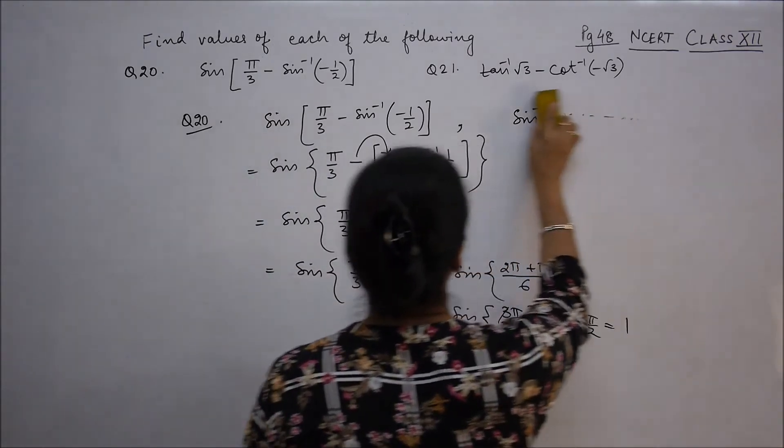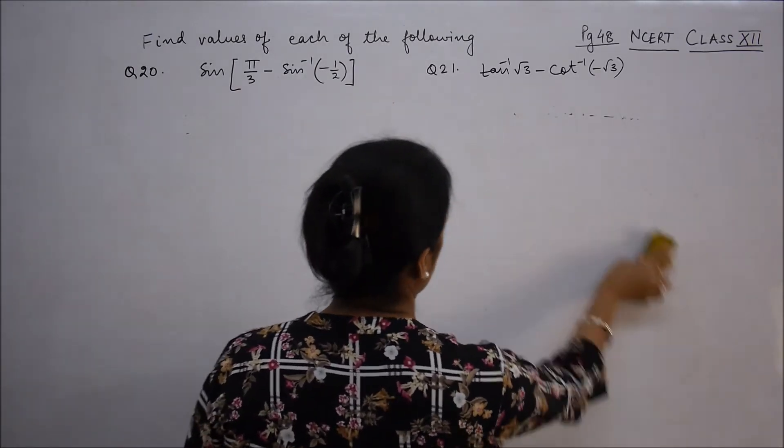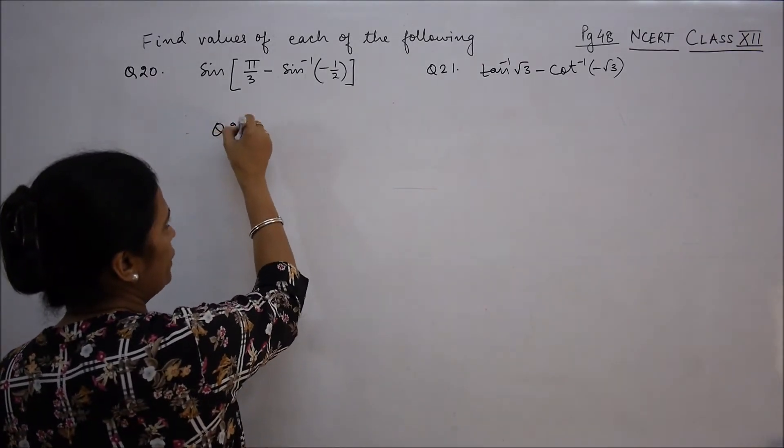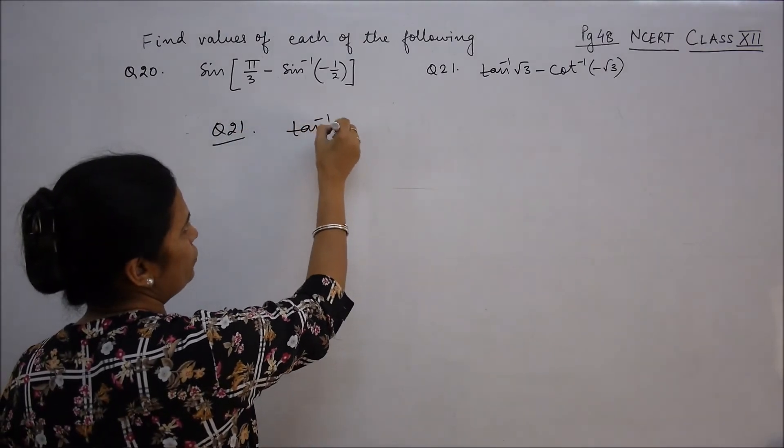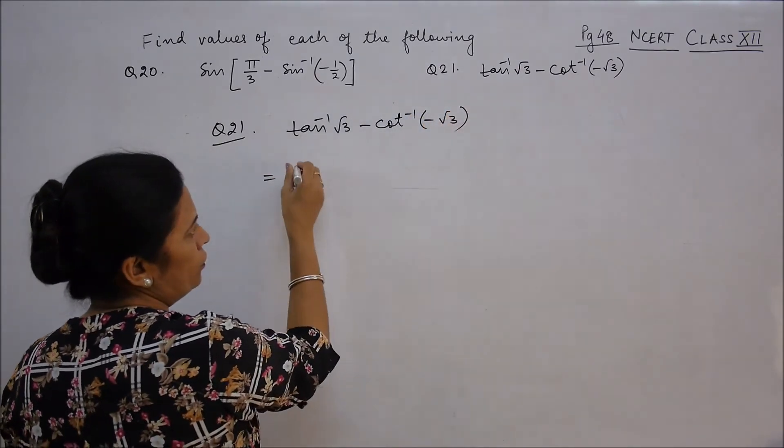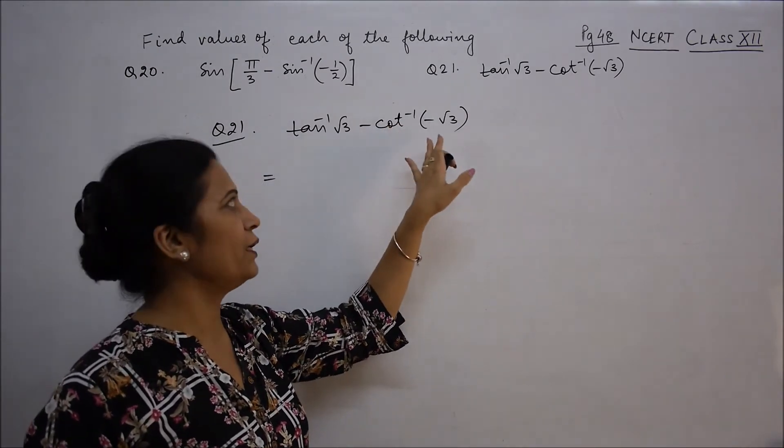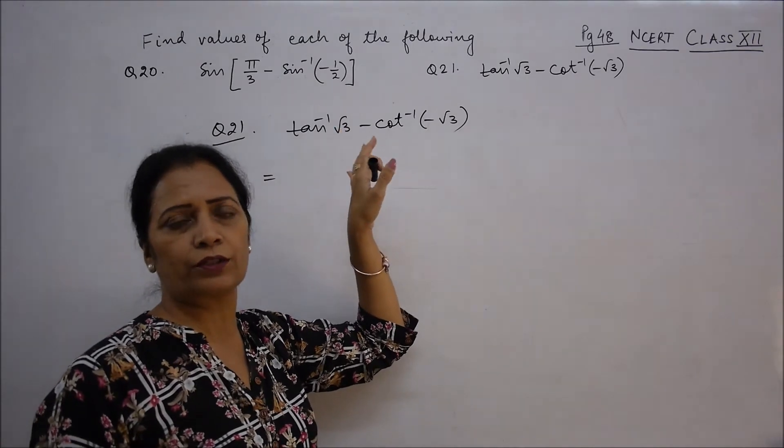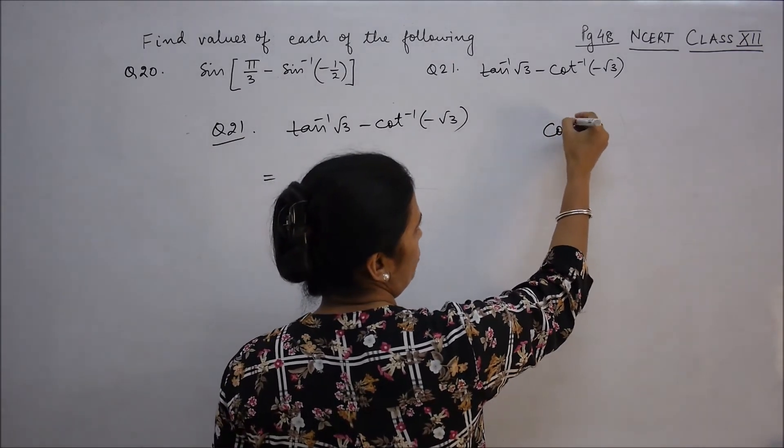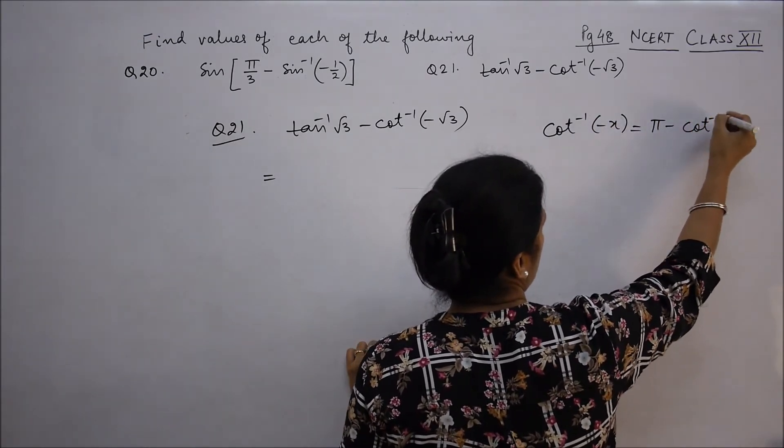Now in this way, next question, question 21. Cot inverse(-x) is π minus cot inverse x.